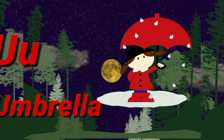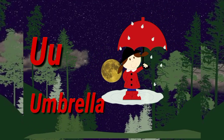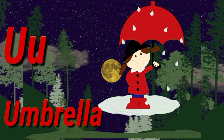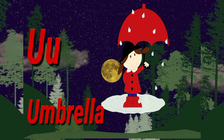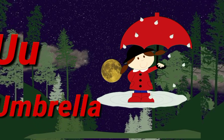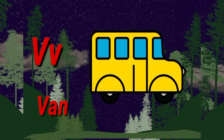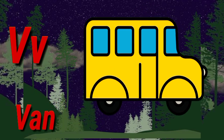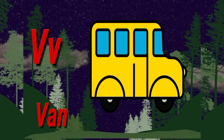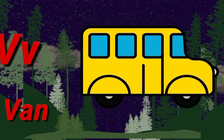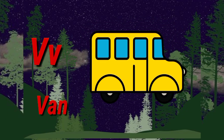U. U for umbrella. Umbrella means chata. V. V for van. Van means gaadi.